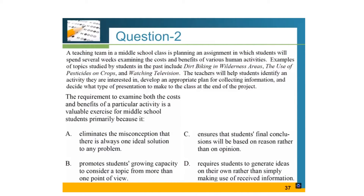Question number two: a teaching team in a middle school class is planning an assignment in which students will spend several weeks examining the costs and benefits of various human activities. Examples of topics studied by students in the past include dirt biking in wilderness areas, the use of pesticides on crops, and watching television. The teachers will help students identify an activity they are interested in, develop an appropriate plan for collecting information, and decide what type of presentation to make to the class at the end of the project.